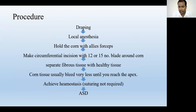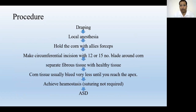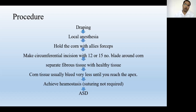If the patient wants surgery and asks to have it removed, go for surgical procedures. The procedure involves first draping and cleaning the area with all preoperative measures. Then give local anesthesia just around the corn at the base. Then hold the corn with Alice forceps — a special forceps with tooth-like structures for a firm grip — and give a circumferential incision around the corn with a number 12 scalpel blade.